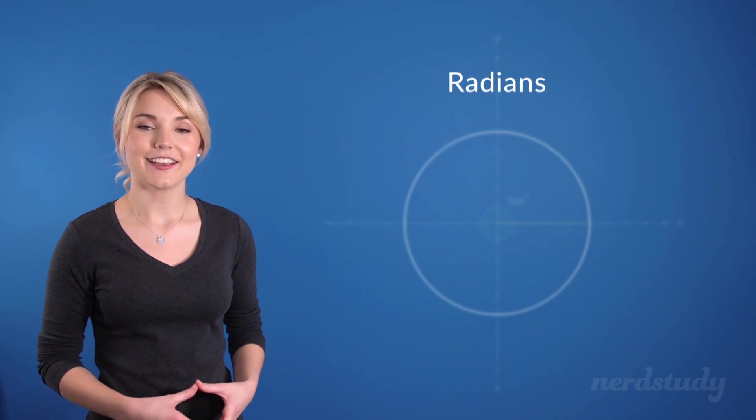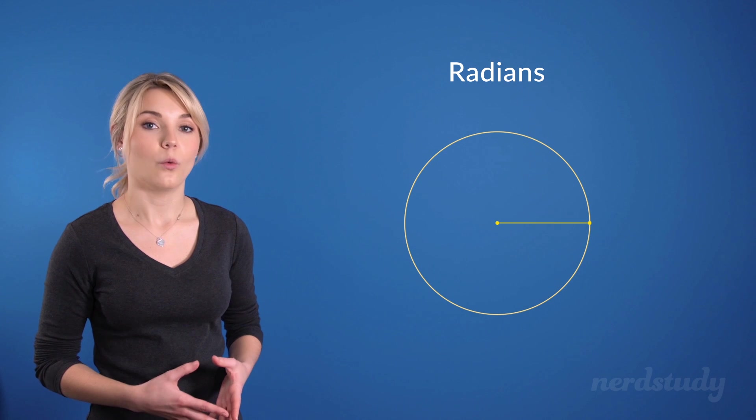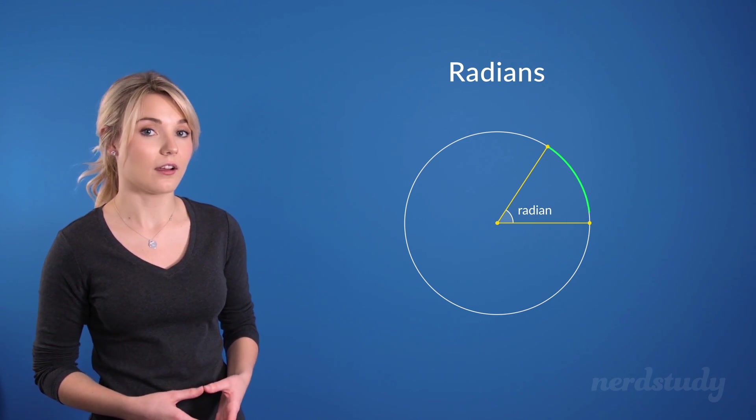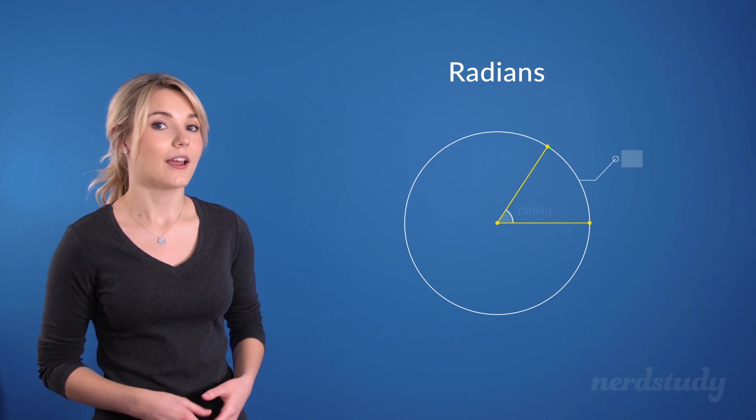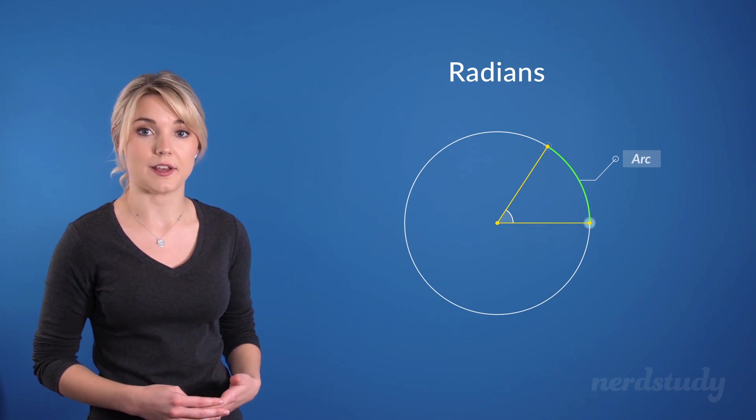Now, let's take a look at a circle to help us define what a radian is. One radian is defined as the amount of angle that would make its arc equal to the length of the radius. Now, the arc can just be described as any smooth curve joining two points.